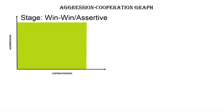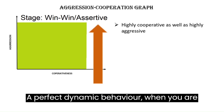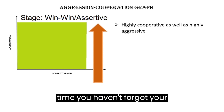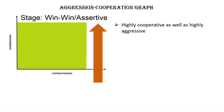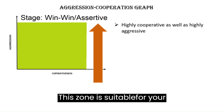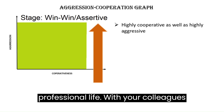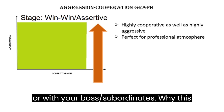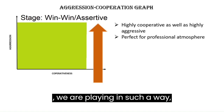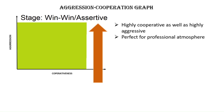Finally, the zone where you are highly cooperative as well as aggressive — this is known as the win-win zone. A perfect dynamic behavior where you are ready to help the person and at the same time you haven't forgotten your own demands. You will always fight for your stipulations and also assist the person. This zone is suitable in your professional life with your colleagues, boss, or subordinates. This zone is called win-win because you are playing in such a way that you are winning yourself and also letting other people win too.